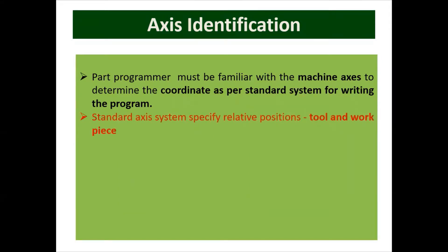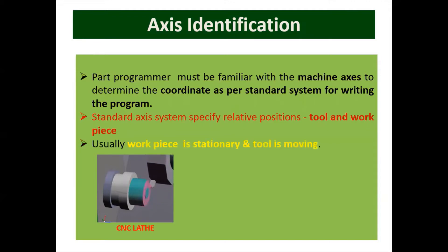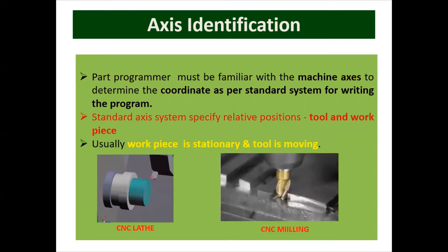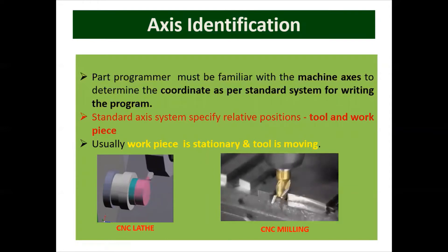The standard axis system specifies the relative position between the tool and the workpiece. In this diagram, I have shown one example of a CNC lathe — there is always a relative position between the tool and the workpiece. Usually the workpiece is stationary and the tool is moving. When the tool is moving, there is a rotary motion and a linear motion of the tool, while stationary means the component is not moved elsewhere — in the lathe machine, only rotary motion is given.